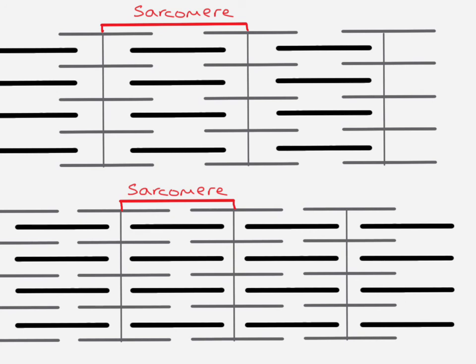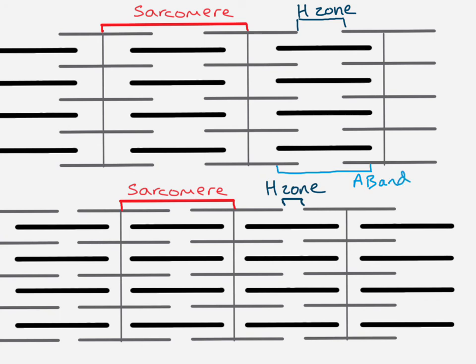Comparing relaxed and contracted myofibrils side by side: the sarcomere (Z-line to Z-line) is much longer in the relaxed state and shorter when contracted. The H-zone (myosin only) is shorter in the contracted state. The A-band (the length of the myosin filament) stays the same in both states. Finally, the I-band (actin only) is longer when relaxed and shorter when contracted.